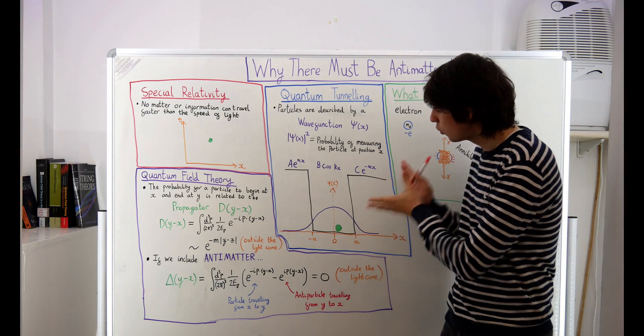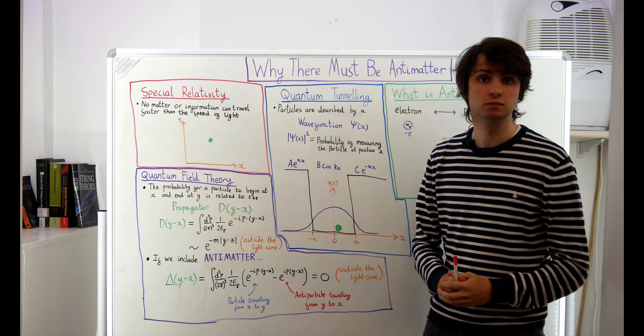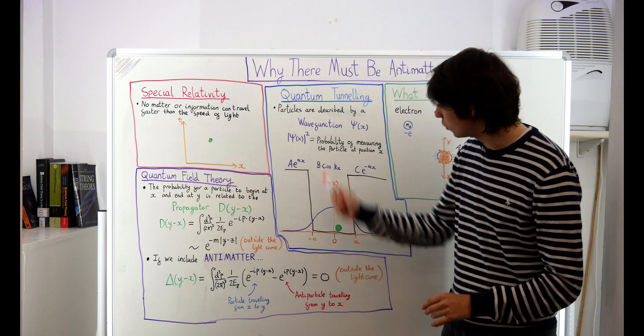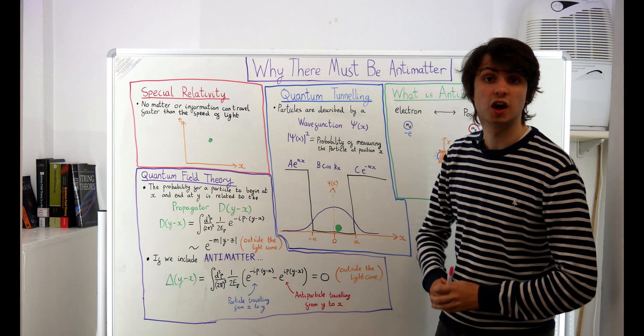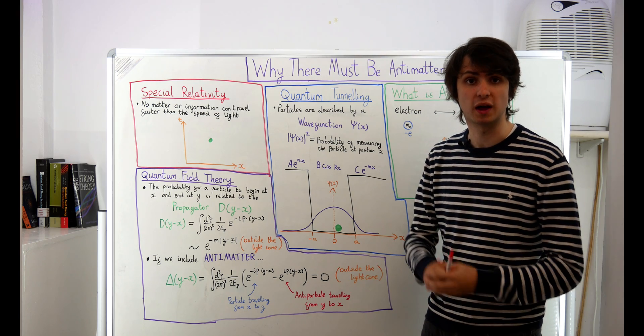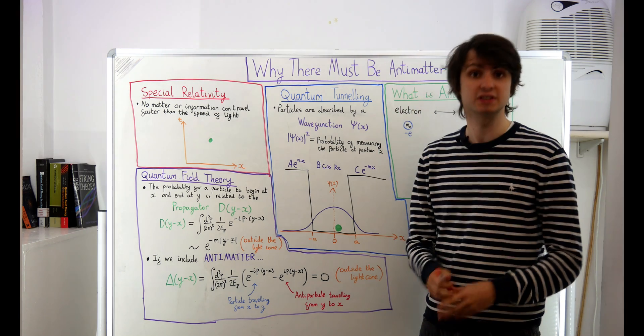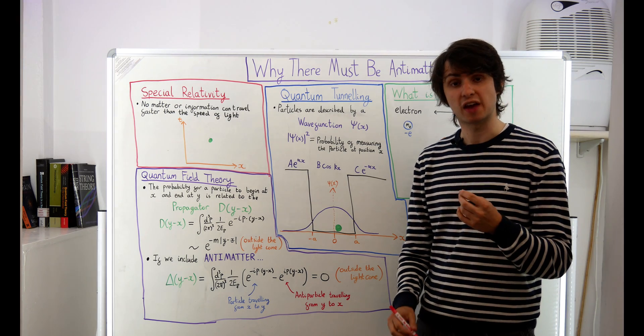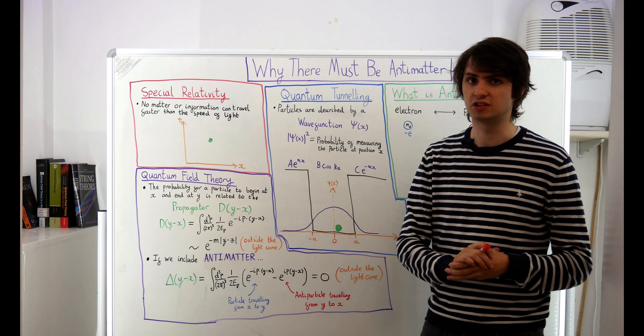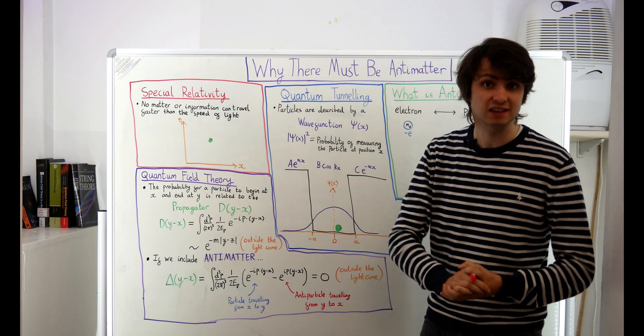In many ways this quantum potential well is just like a real life well. Let's suppose that our particle is a tennis ball and our quantum potential well is just like a real life well. If a tennis ball is stuck down the bottom of a well then you expect it to stay there. If you just dropped it down there then it may have enough energy to bounce around a bit at the bottom of the well but it certainly doesn't have enough energy to get back up to where you dropped it from and actually escape the well.